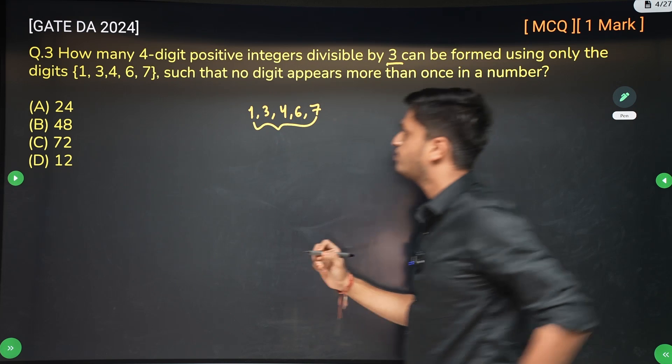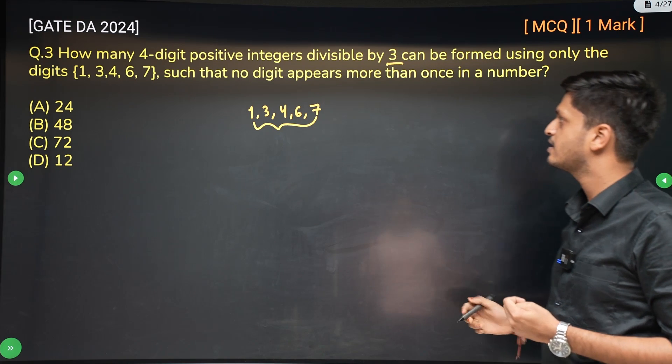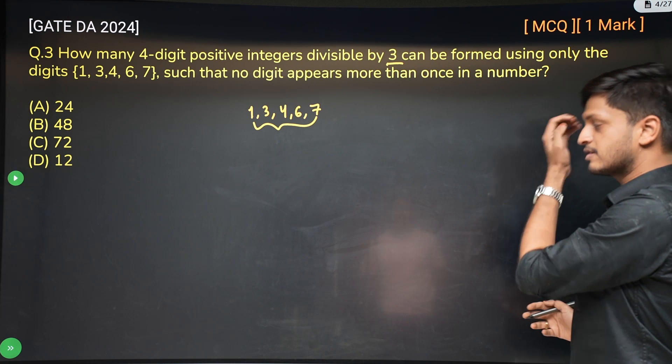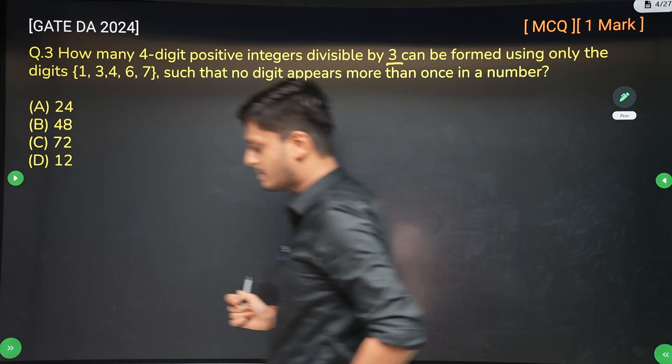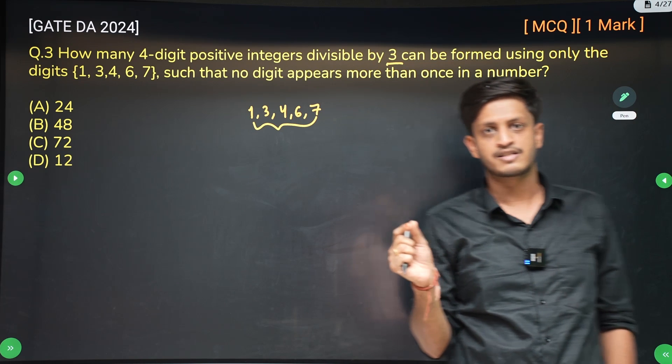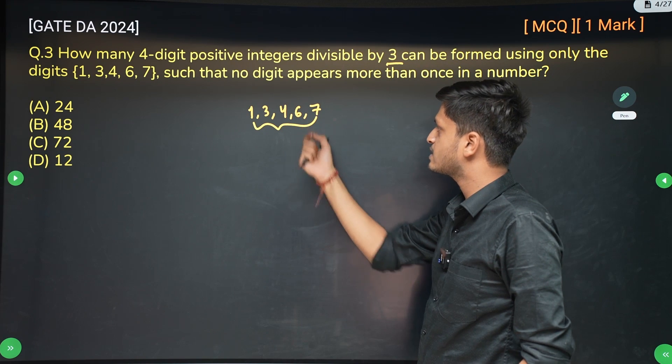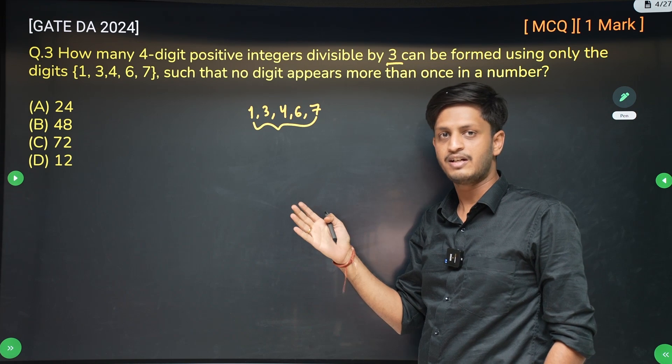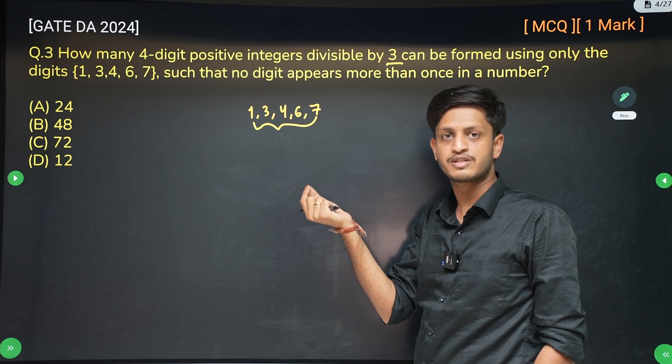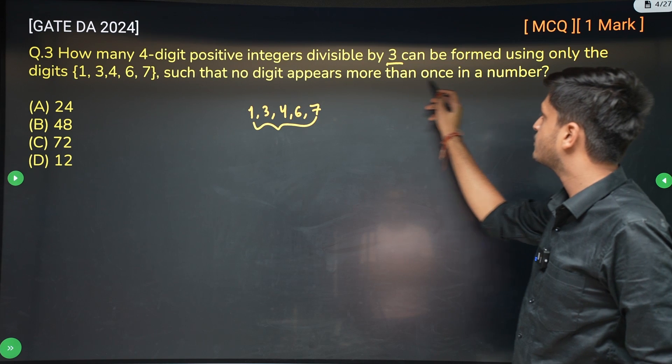And we have to form 4-digit positive integers using these 5 digits such that no digit appears more than once. Okay, firstly, what is divisibility by 3 rule? So the number is divisible by 3 if sum of the digits is divisible by 3, right? So basically, we need to take 4 digits out of these 5 digits in such a way that the sum of those 4 digits is divisible by 3. And also no digit can appear more than once.